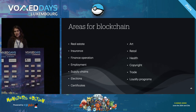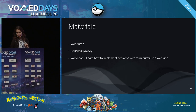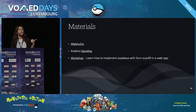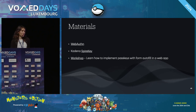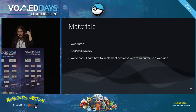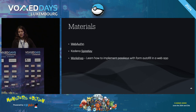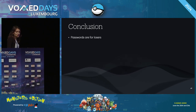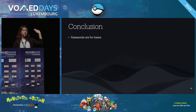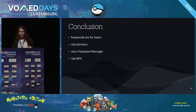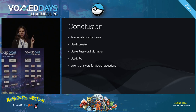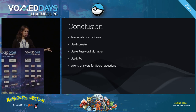Here are some resource links: WebAuthn on the webauthn.io website has examples for implementing in Java, Flutter, PHP, Python, and other backend languages. SpireKey and Kadena are also easily searchable — both open source. There's also a Google Developers workshop on step-by-step implementation. Conclusion: passwords are for losers! Use biometry, password managers, and multi-factor authentication.